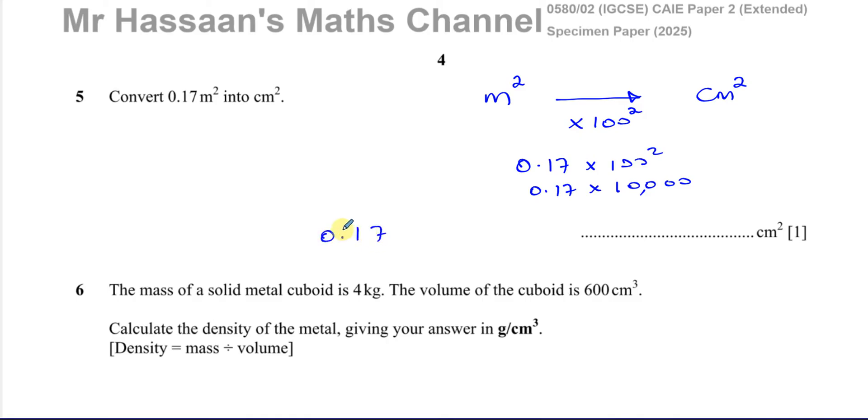Now that means we're going to take the decimal point which is here. And we're going to move it 4 spaces to the right. So 1, 2, 3, 4. So we end up with 1, 2, 3, 4: 1,700 cm².